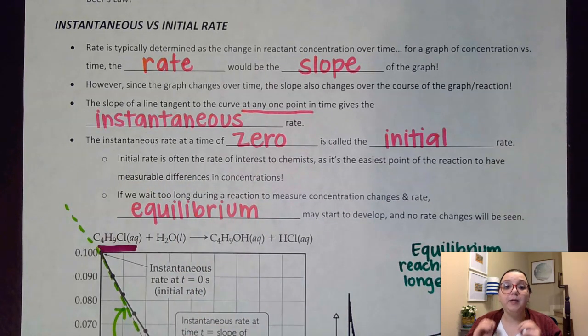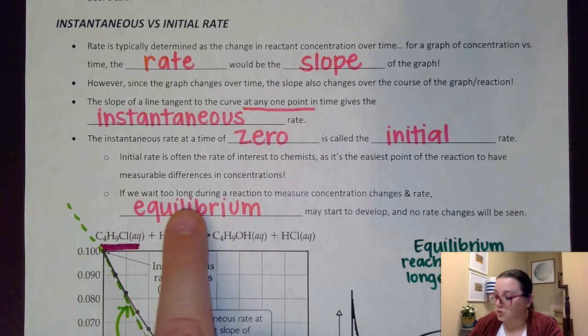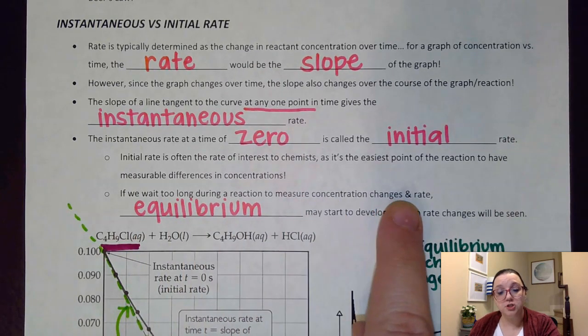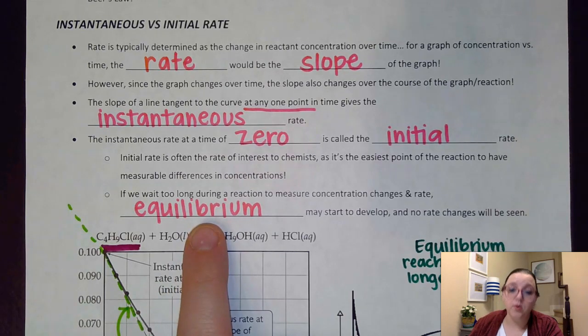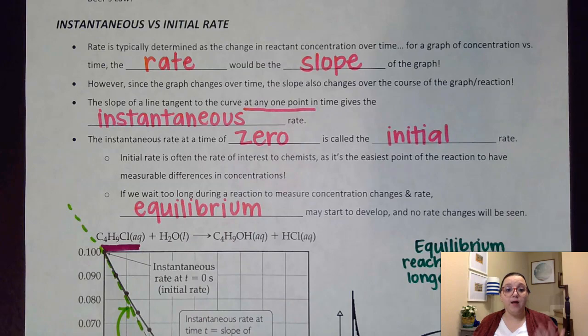Now, as I mentioned earlier, initial rate is often the one that we care about the most because that's where we're getting lots of changes to happen at. And so that's where we're going to have some measurable change occurring that we can actually calculate with. So most of the time when we are calculating rate law experiments, we are going to be using initial rates. You're going to hear that term used a lot within this unit. And the reason why is if we wait too long during a reaction to measure concentration changes, as we saw in those graphs, they tend to start to flatten out. And the reason why is we're starting to reach what is called equilibrium, where no rate changes will be seen at that point anymore.